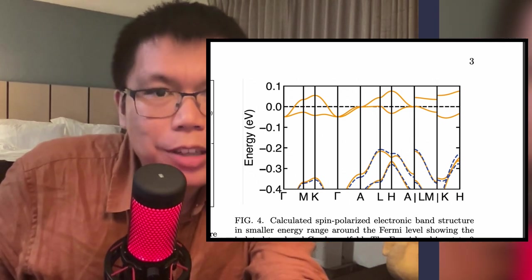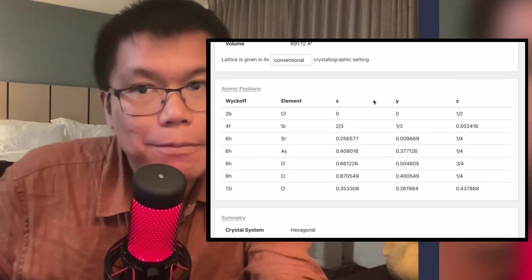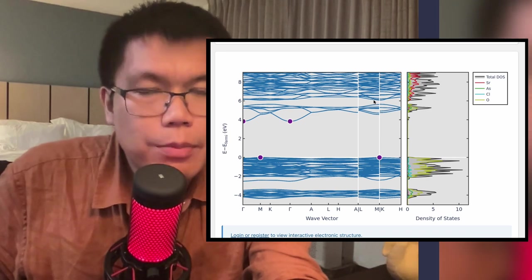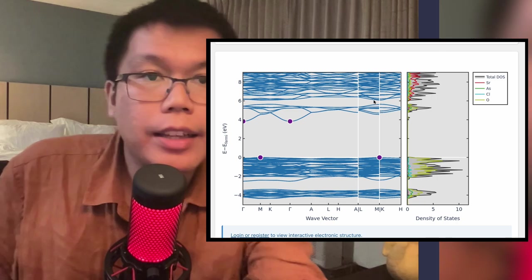So I have pulled up next to us a few other similar materials and their band structures. So this is a band structure of a similar apatite material. This is, I believe, a strontium apatite.